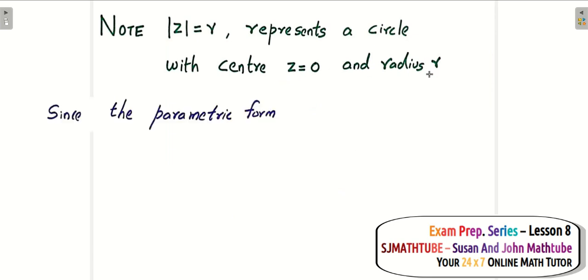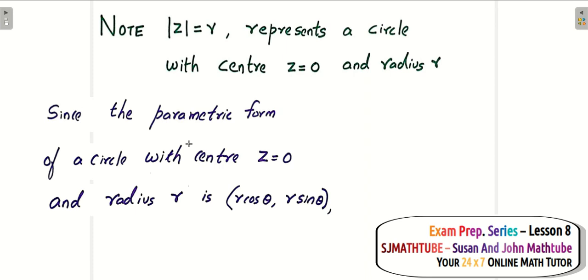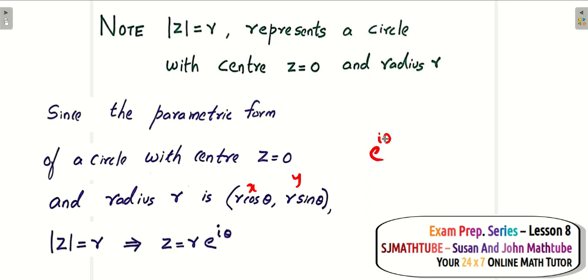You may have learned the parametric form of a circle: (r cos θ, r sin θ), where x = r cos θ and y = r sin θ. This can be written as r·e^(iθ), because e^(iθ) = cos θ + i sin θ, giving the complex number r cos θ + i r sin θ. So whenever you see |z| = r, you write z = r·e^(iθ). This is the modulus-argument form.